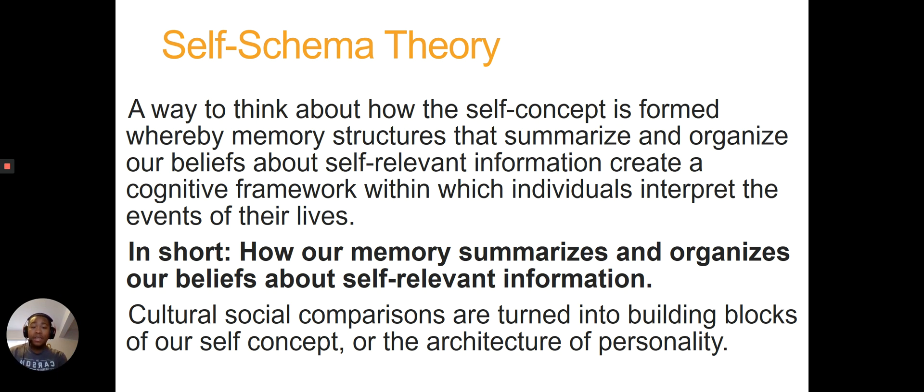So self-schema theory, the book definition, is a way to think about how the self-concept is formed, whereby memory structures that summarize and organize our core beliefs about self-relevant information create a cognitive framework within which individuals interpret the events of their lives. A really short version, my short definition, is how our memory summarizes and organizes our beliefs about self-relevant information. Now, when you think about what is self-relevant information, part of this can be as you grow and as you encounter different things, what is self-relevant information changes quite a bit.